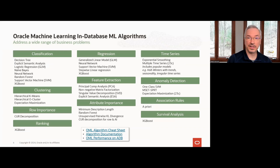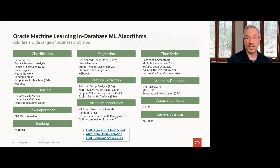OML supports these use cases and others by providing a rich set of algorithms across multiple machine learning techniques. You might ask why we have multiple algorithms for a given technique. Some are better at finding certain types of patterns in data than others, and some offer a greater degree of transparency to understand those patterns — the insights that were discovered. Each has its own computational demands, meaning some are faster than others.